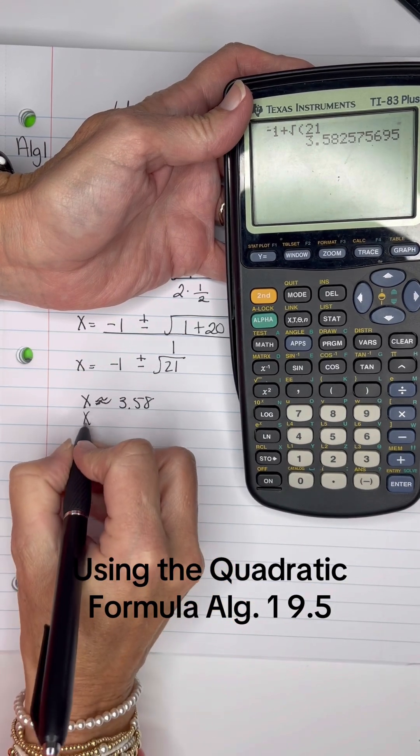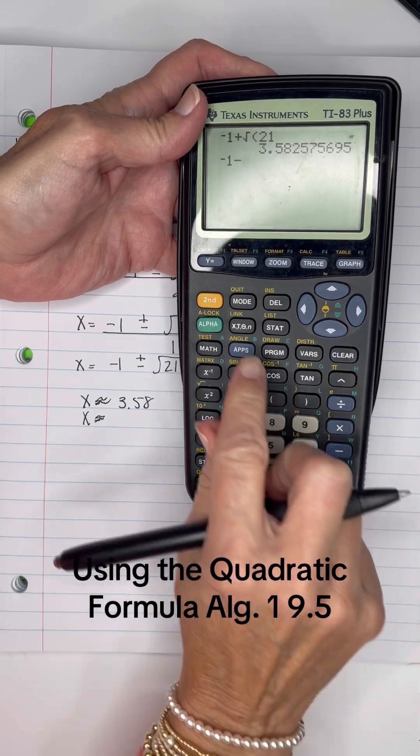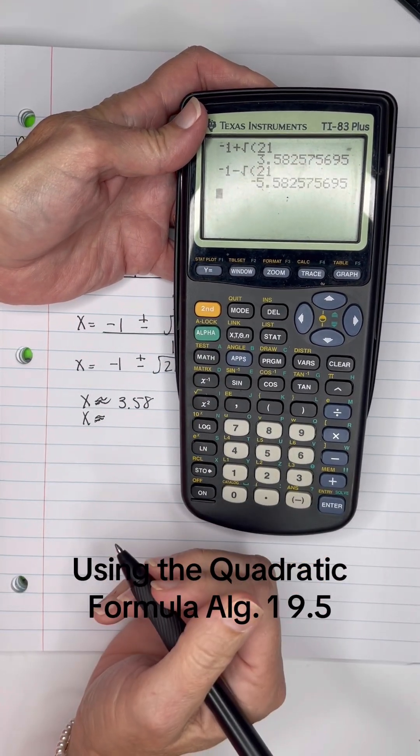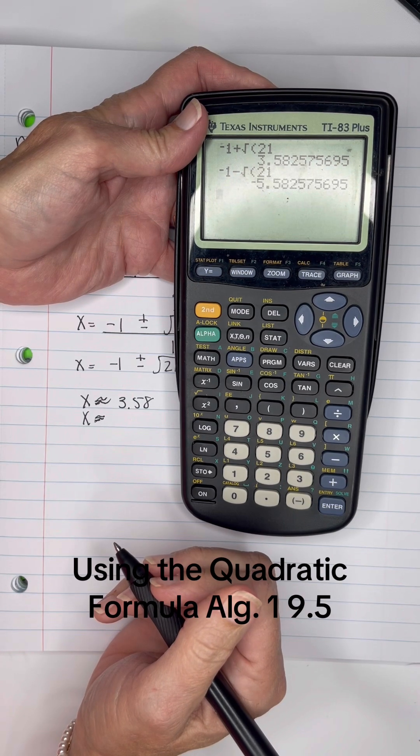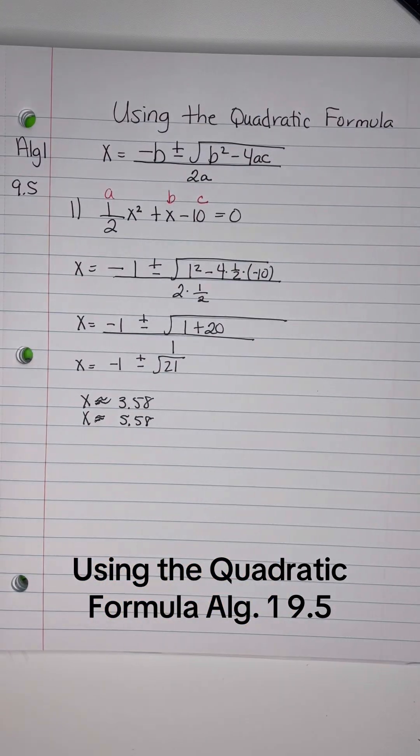And then we'll do it again with negative 1 minus the square root of 21, which is negative 5, negative 5.58 approximately.